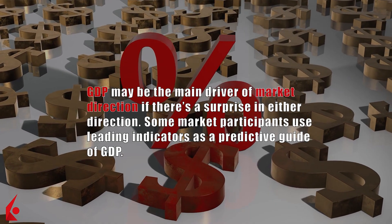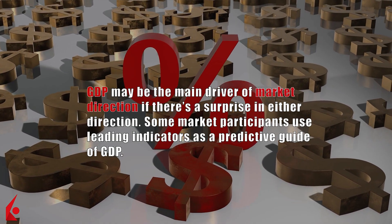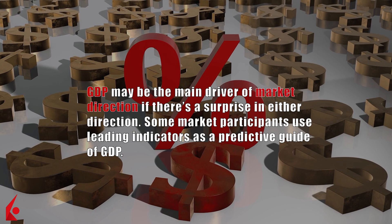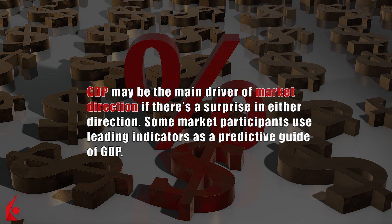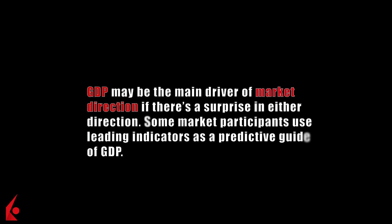GDP may be the main driver of market direction if there's a surprise in either direction. Some market participants use leading indicators as a predictive guide of GDP. GDP is a barometer for opportunity and prosperity. Monitoring changes in the economy and analyzing the acceleration, deceleration, or reversal of GDP is important when making investment selections globally. Fast economic growth will likely lead to fast financial asset growth, and financial asset values won't sustainably grow if GDP is declining.